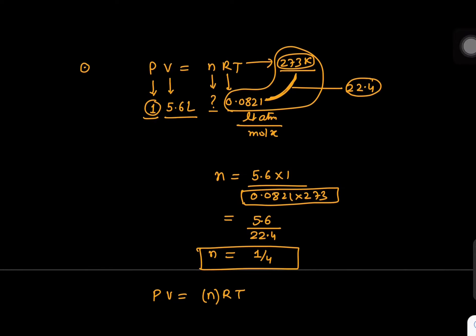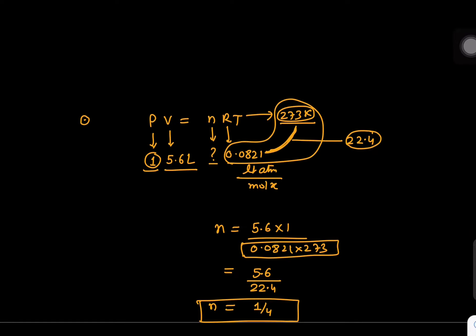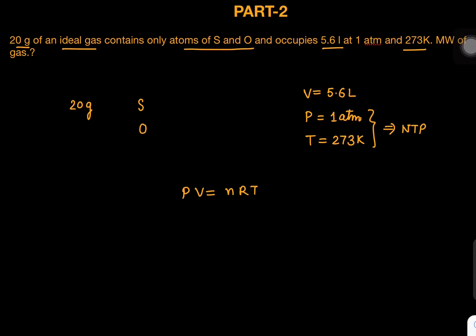One mole of any gas at NTP will have 22.4 liters as the volume, but you have only 5.6 liters which is a one-fourth number. These 5.6, 11.2, 44.8 numbers we should be familiar with. So this is one-fourth moles.